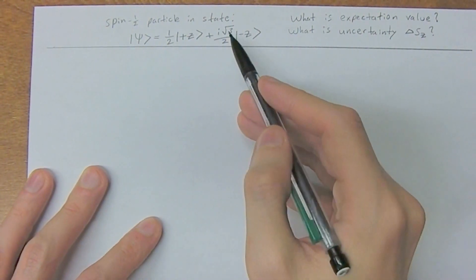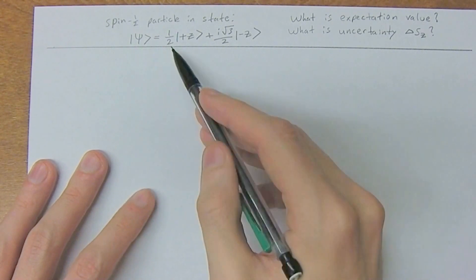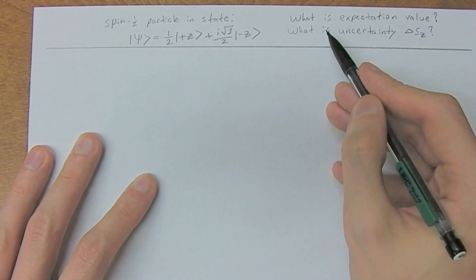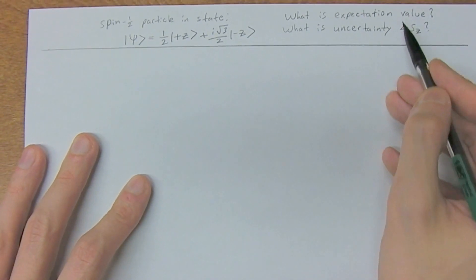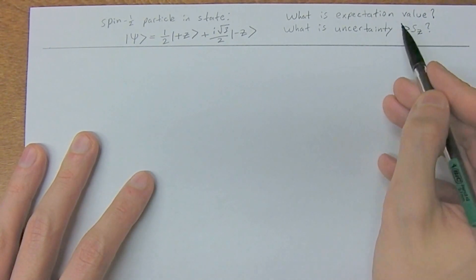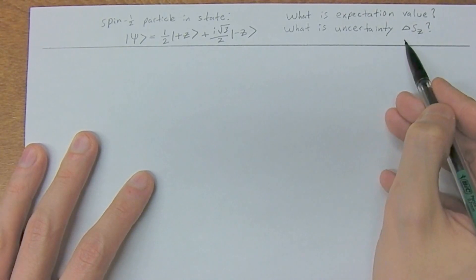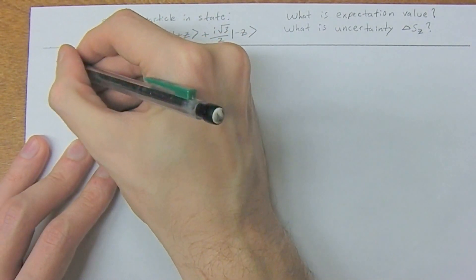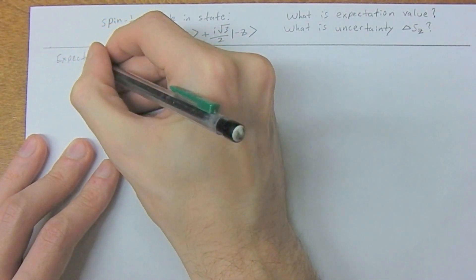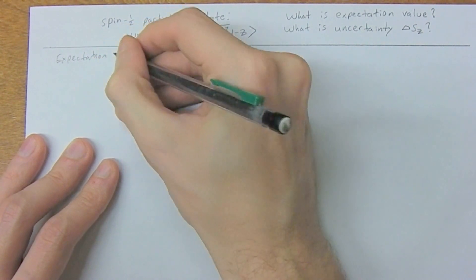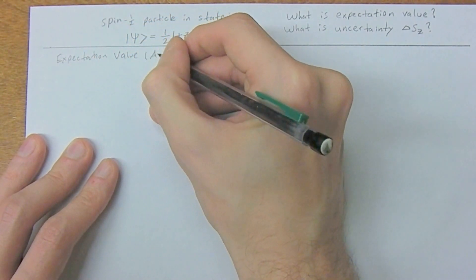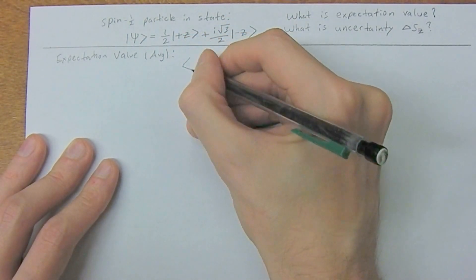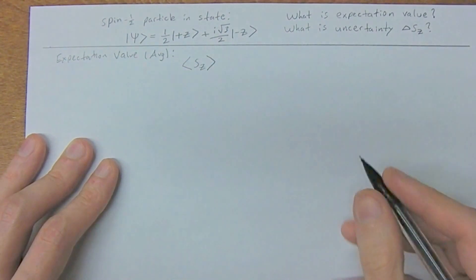For a spin one-half particle in state ket psi equals one-half ket plus-z plus i times square root of three over two ket negative-z, we're going to find the expectation value — which is a fancy way of saying the average value — and we're going to find the uncertainty delta S_z. So to find the expectation value, we represent it with these angle brackets.